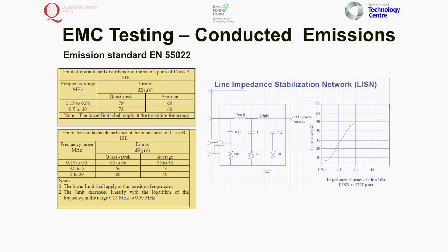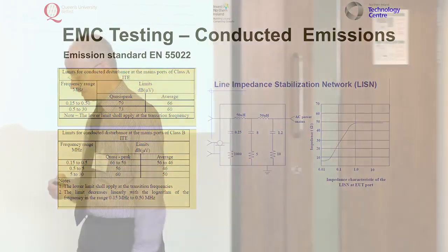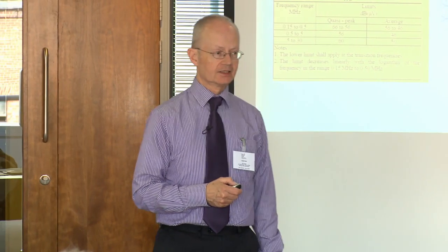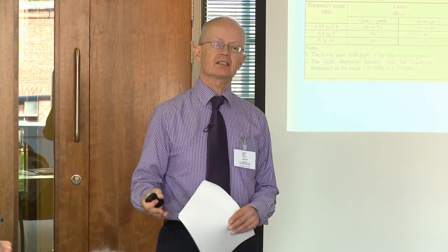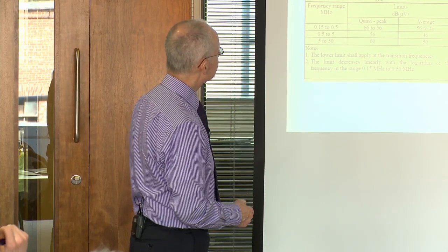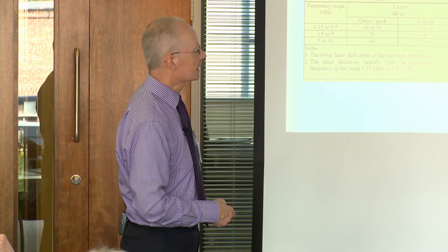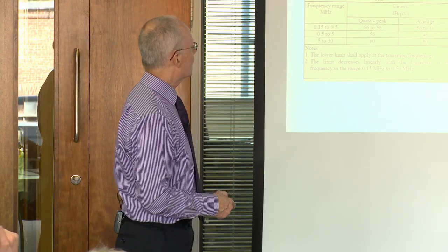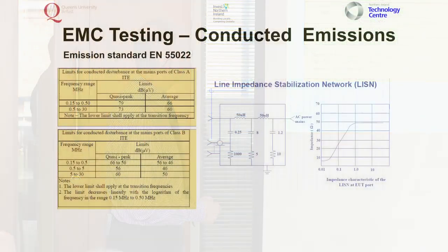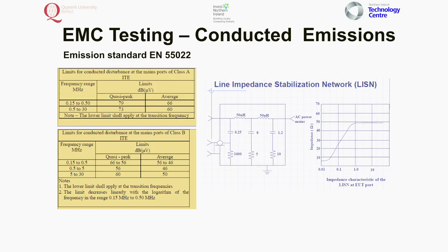For conducted emissions, you use a receiver but this time there's a Line Impedance Stabilisation Network — a LISN. It doesn't have to be done in a shielded room, although I do it in a shielded room, but it's a different shielded room to the anechoic chamber. This stabilises the mains power coming in. There's no separate indication of neutral because it's done per phase — neutral is a phase as far as the LISN is concerned. The measurement is made live to earth and then neutral to earth — two separate measurements.